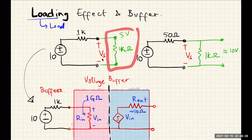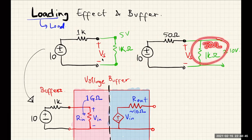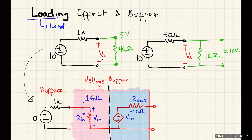Even in the second circuit, if you make the load resistor smaller and smaller down to say 50Ω, the output voltage will again drop to five volts due to the same loading effect. With a smaller series resistance, the second circuit can handle a much wider range of loads on its output. If you're not paying attention to the output resistances or input resistances of different parts of your circuit, loading can cause serious problems.